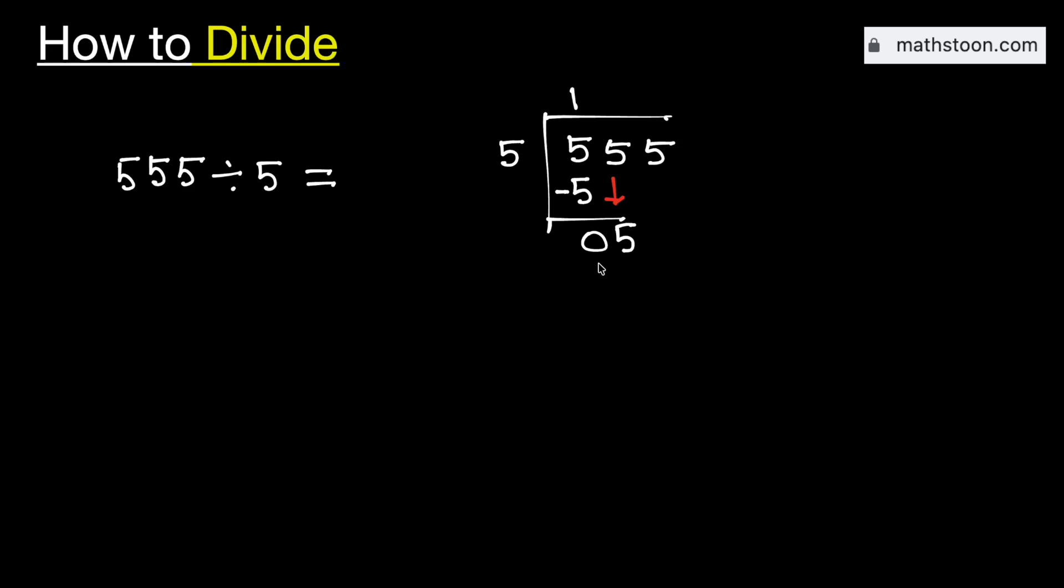See that this is the number 5, so remove this 0. We know that 5 times 1 is 5. Subtract, we get 0.